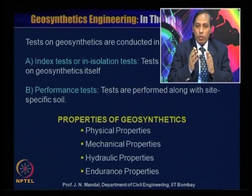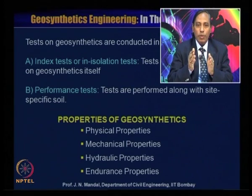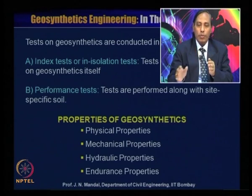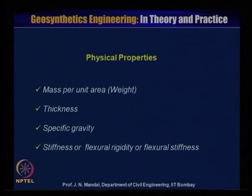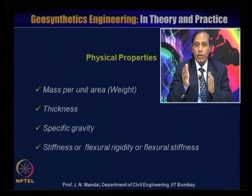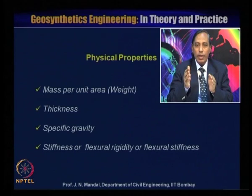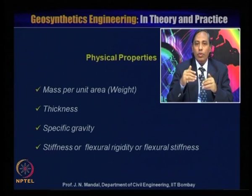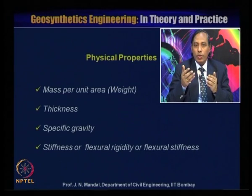Tests on geosynthetics are conducted in two different ways: (a) in isolation tests, where tests are performed only on the geosynthetics material itself, and (b) performance tests, where tests are performed along with site-specific soil. We will discuss the properties of geosynthetics — physical, mechanical, hydraulic, and endurance properties — for different types of material: woven geotextile, nonwoven geotextile, geogrid, geomembrane, geosynthetic clay liner, and geoshell.